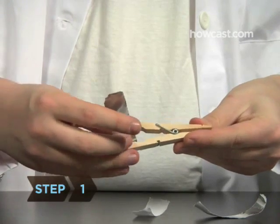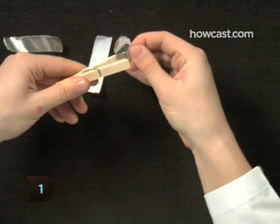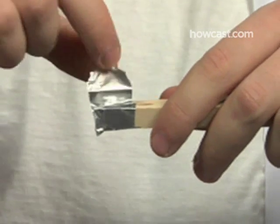Step 1. Wrap aluminum tape around both tips of the clothespin, leaving a tab on each end so you can attach wires.